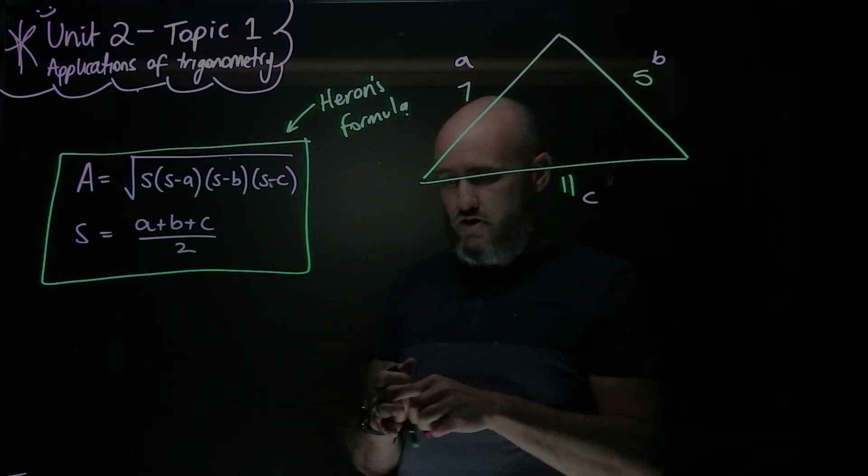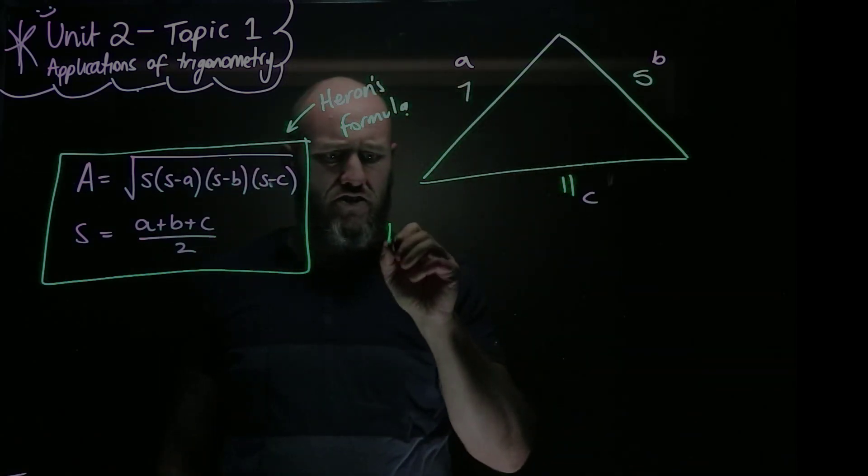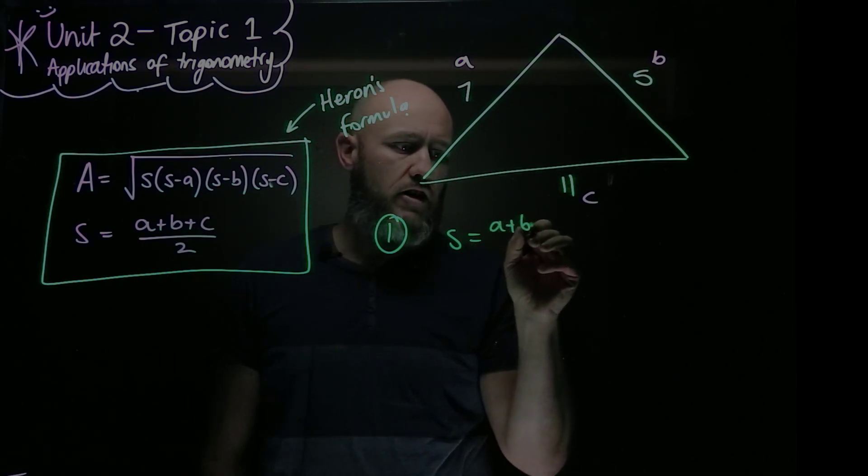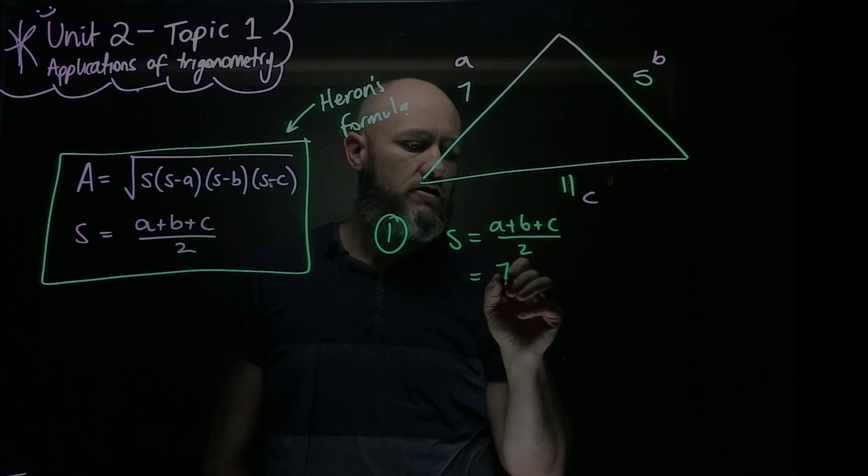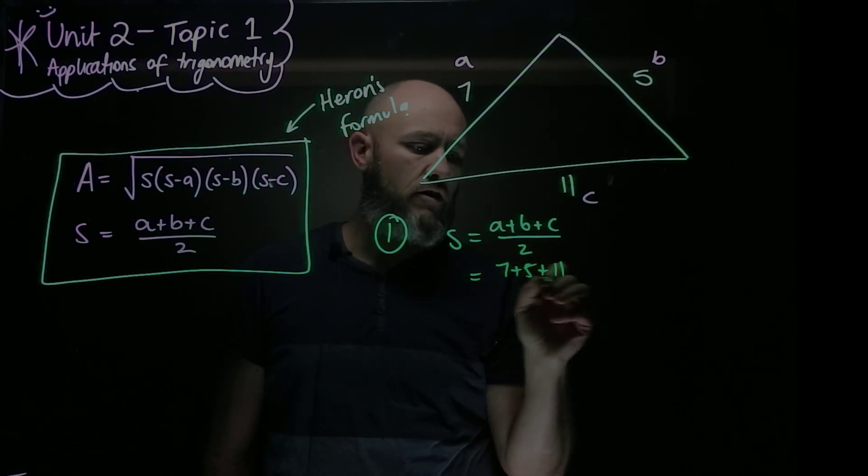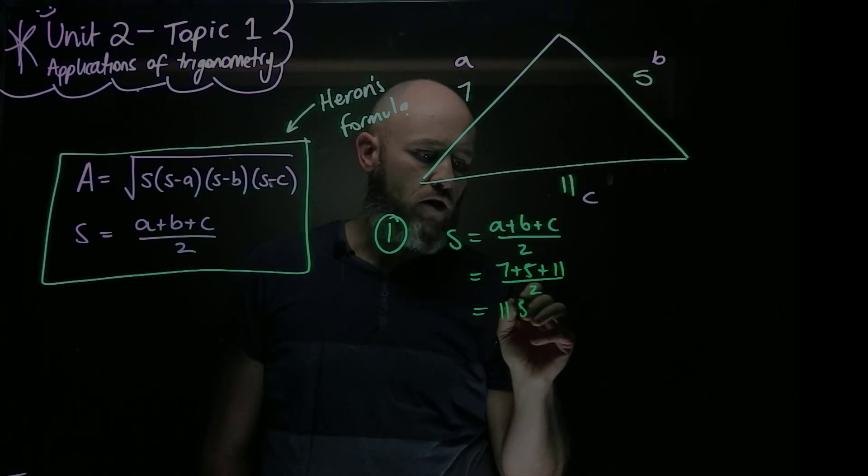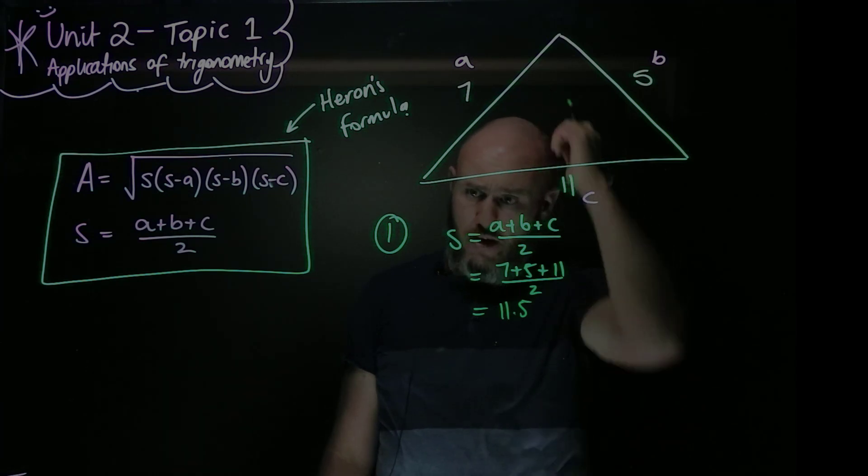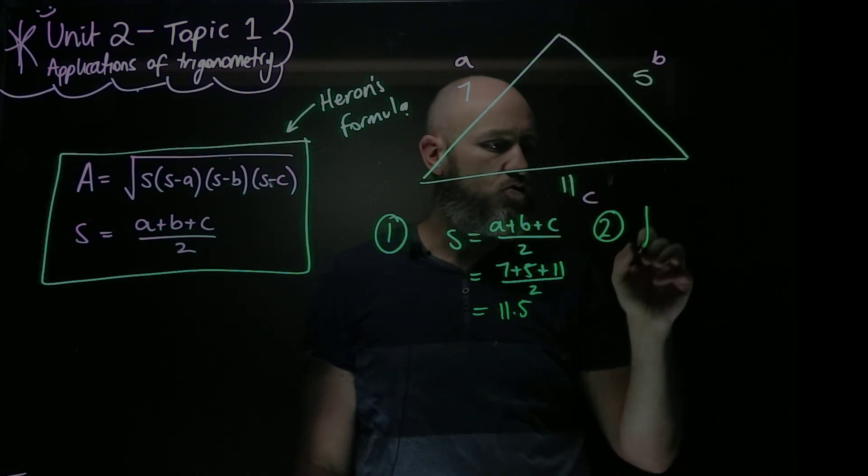We can use it now to find, and this is the process I'd expect to follow. Find S, then calculate the area. So, step one. S equals A plus B plus C over 2. Which in this case is 7 plus 5 plus 11 over 2, which is 11.5. Okay, so we've got our S value, 11.5. And now, step two is to put it in the Heron's formula. So we get the square root.